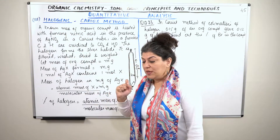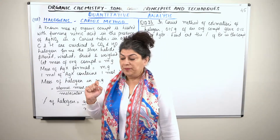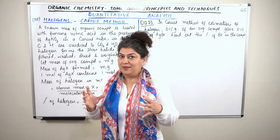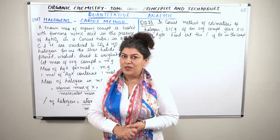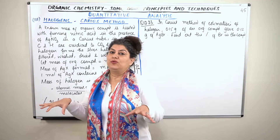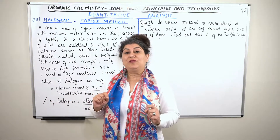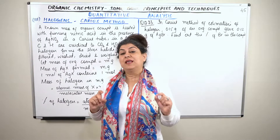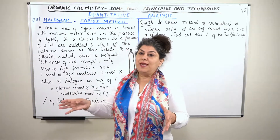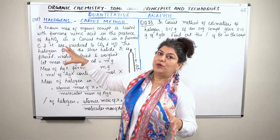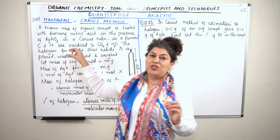The halogens in organic compounds are usually chlorine, bromine, or iodine. You already know how the qualitative analysis of these is done; we are now going to do the quantitative analysis. If you remember, in the case of halogens we prepared the silver halide of these compounds. We do the same, but this is now known as the Carius method.